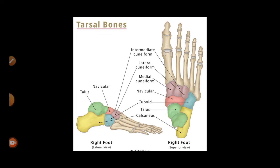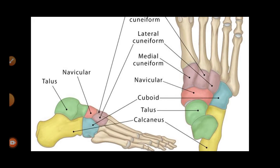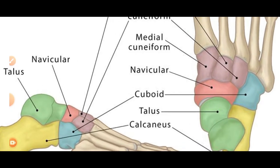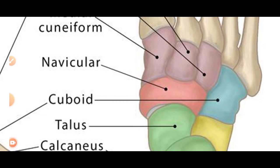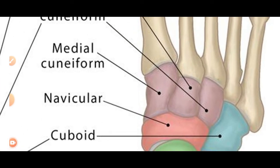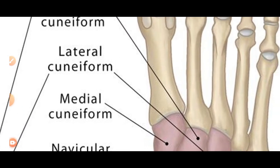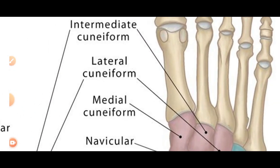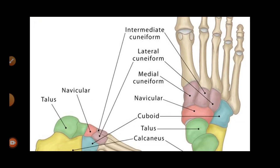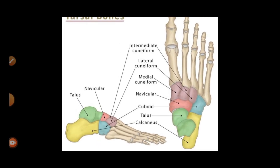The tarsals are 7 in number. The carpals are 8 in number — scaphoid, lunate, triquetrum, trapezium, trapezoid, capitate, and hamate. The 7 tarsals are: calcaneus, calcaneum, talus, and a cube-shaped bone which is the cuboid. Then there are bones shown in pink, navy and other colors representing the cuneiforms — lateral cuneiform, middle cuneiform, and intermediate cuneiform.